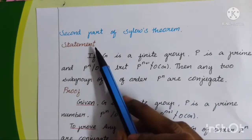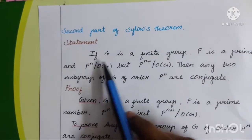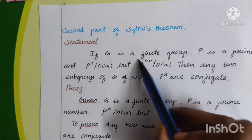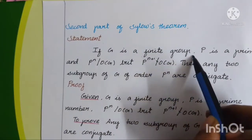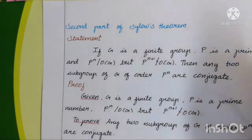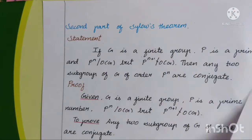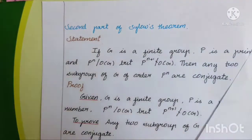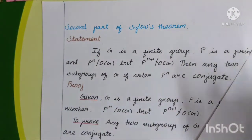Now we will show you the statement. If G is a finite group — we have a finite group, there is a group with a finite number. Finite means a countable number.